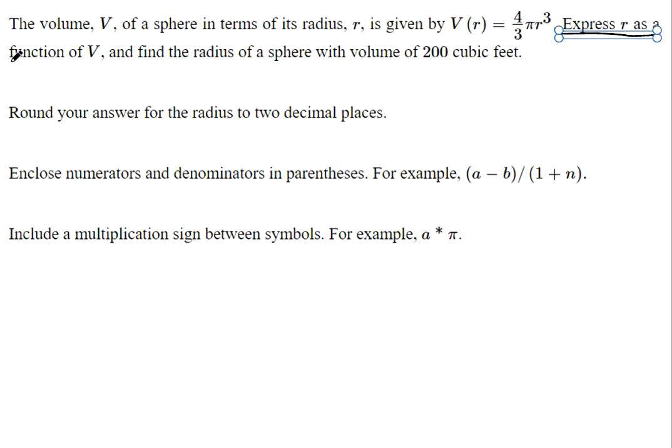We're asked to express r as a function of v. That basically means we want to rewrite this as if it was an equation and get r by itself. So v equals 4 thirds times pi times r to the third.